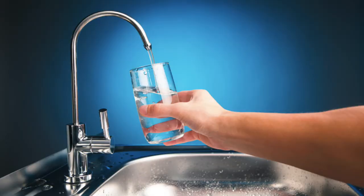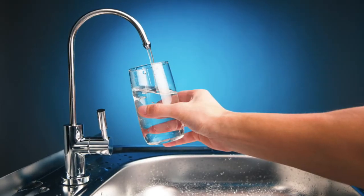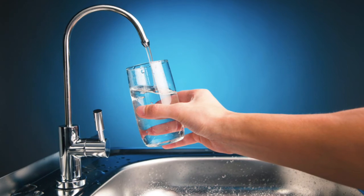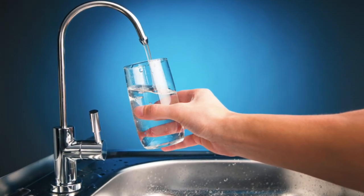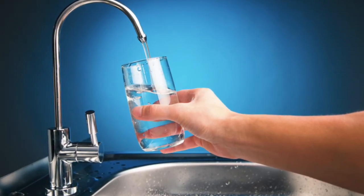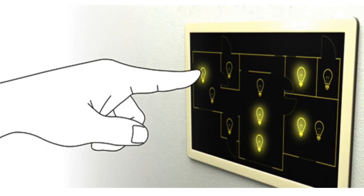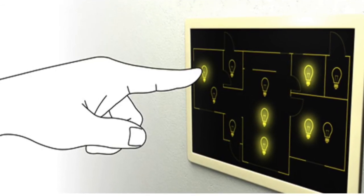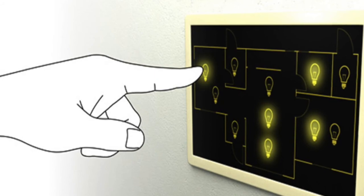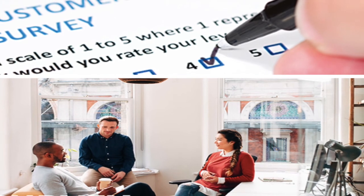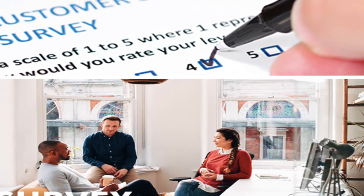Seven: maintain availability and accessibility of safe and clean drinking water in compliance with water quality standards. Eight: give occupants temperature, ventilation, and lighting control. Nine: regularly conduct occupant surveys and post-occupancy evaluations.